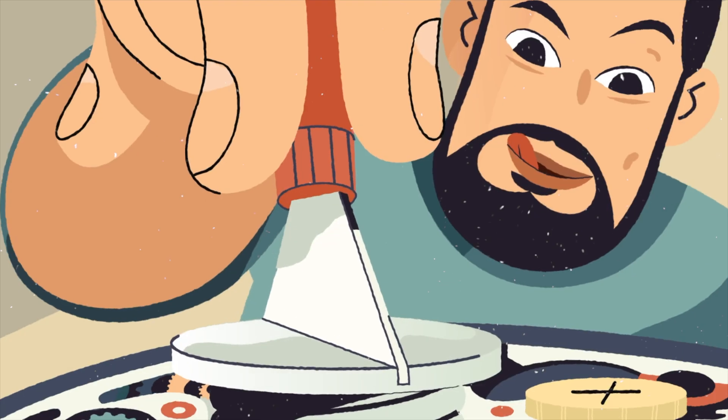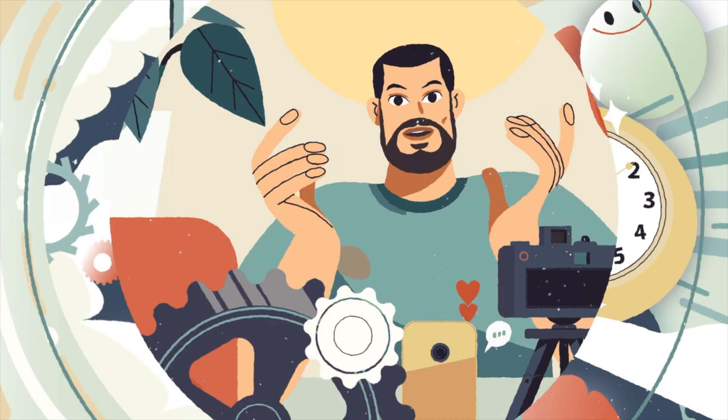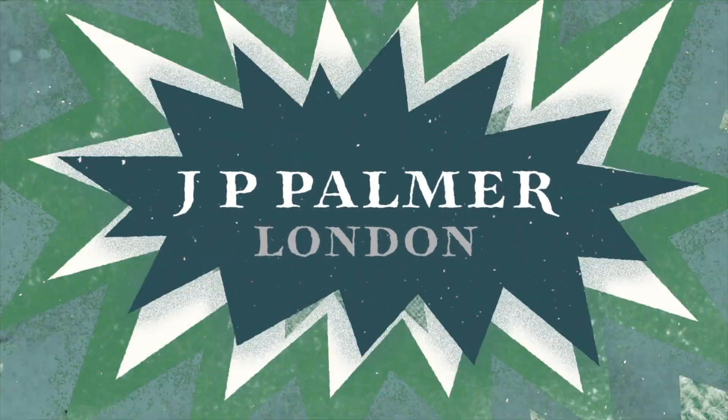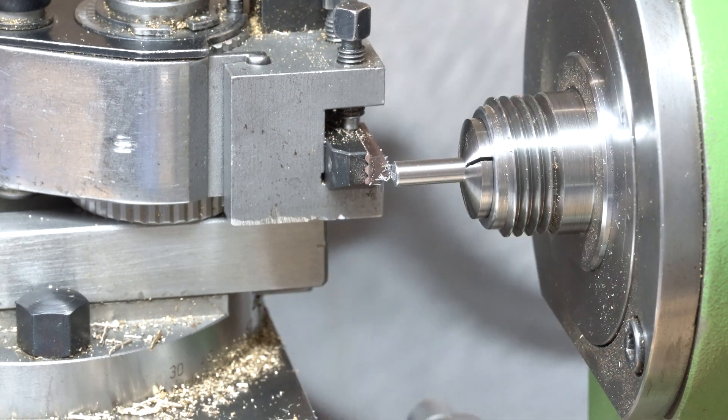Hello! Welcome to episode 3 of making a 5 minute tourbillon wristwatch. In this episode we're going to be making the barrel bridge screws. These screws are M1 so they're nice and chunky and we shouldn't have any issue making them.